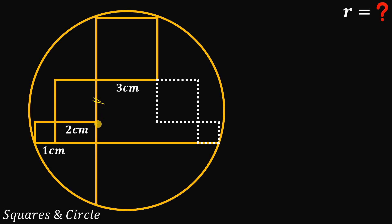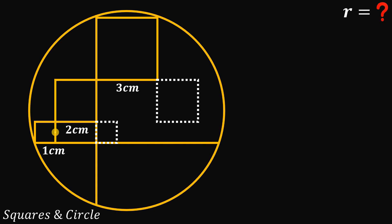Now let's extend this side of the two-by-two square. The length of this piece is just one centimeter — the side of the small square. Also take note that those segments are perpendicular to one another.